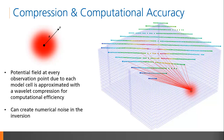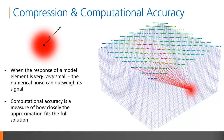In inversion modeling, the potential field at every observation point due to each model element is calculated. Storing the complete expressions for these fields can be computationally demanding. To ease the load, the field is approximated with wavelet compression. In some instances, this can create numerical noise in the inversion. When the response of a model element is very, very small — for example, from an element deep in the model — the numerical noise can outweigh the element's signal. In VOXI, the computational accuracy is a measure of how closely the wavelet compressed approximation fits the full solution.